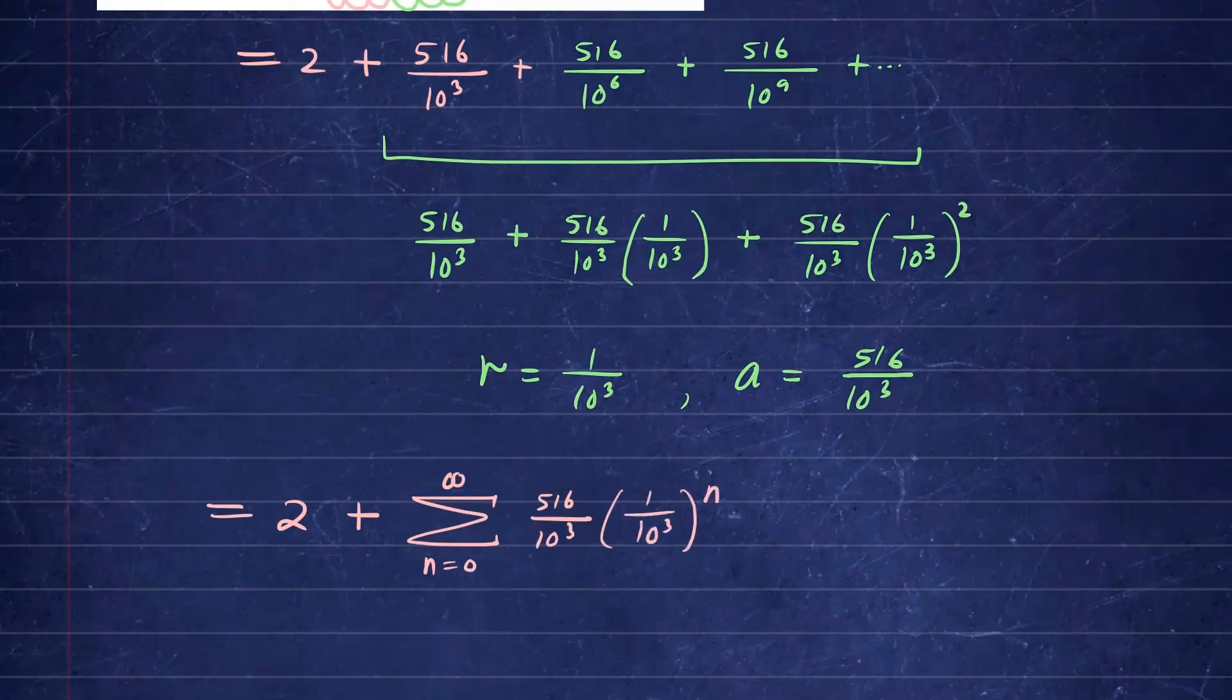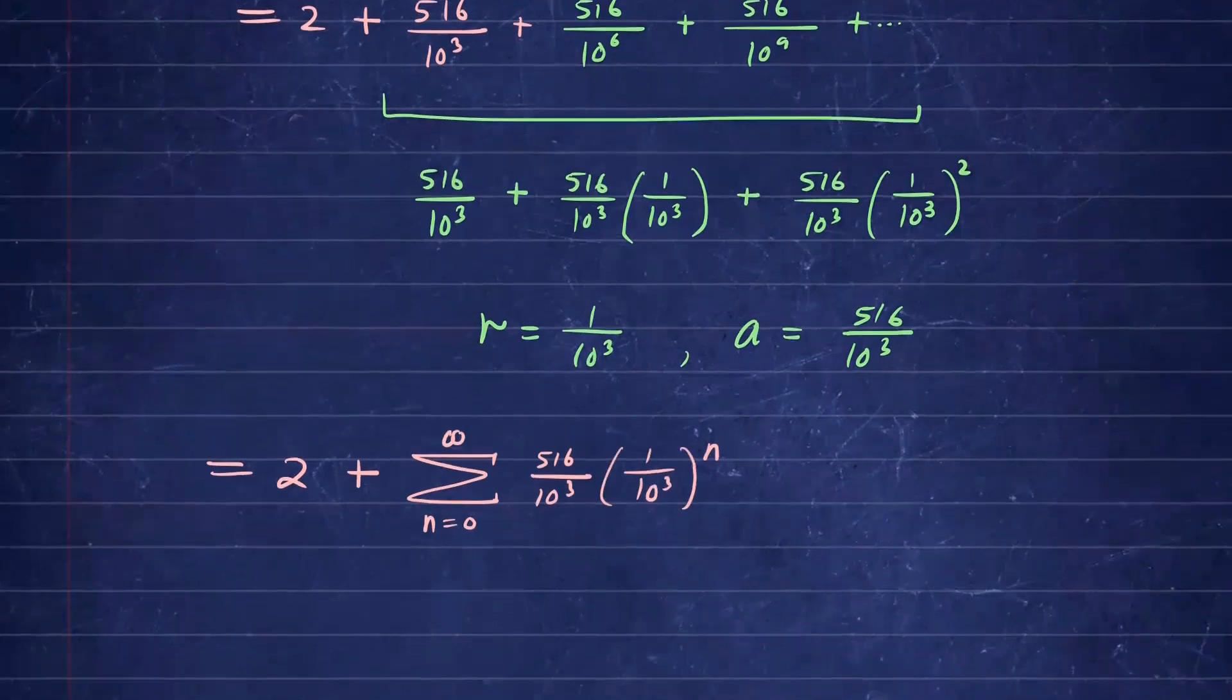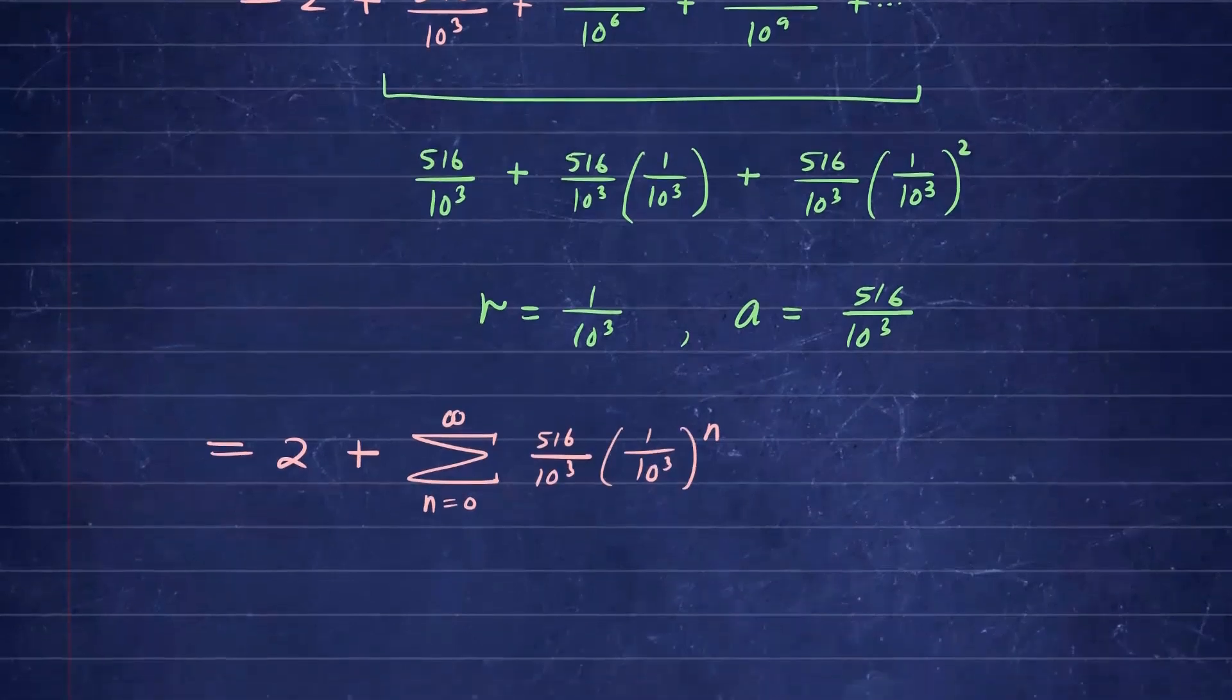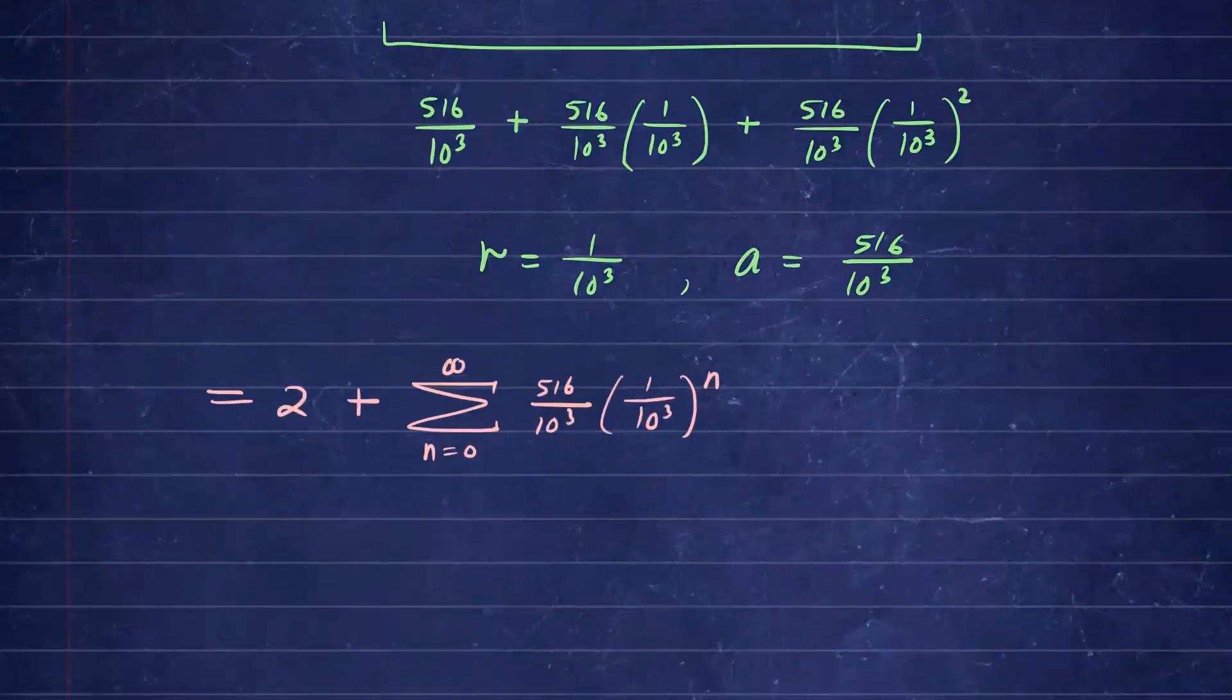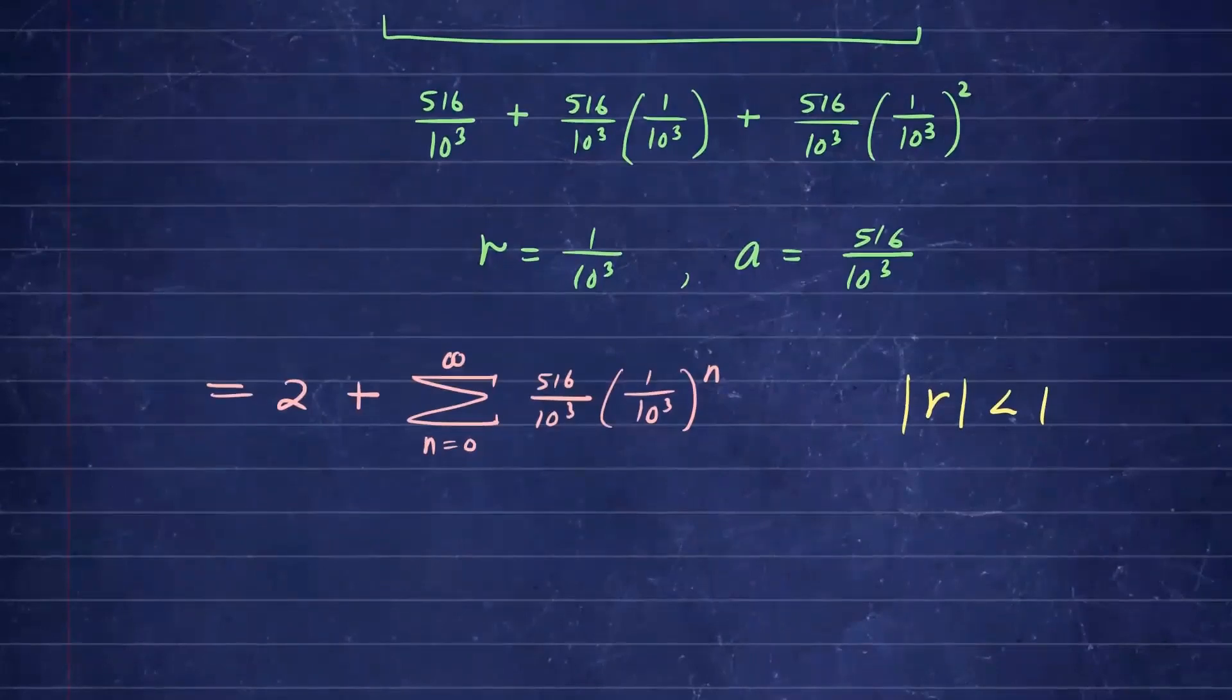And now you just want to test it out. This formula works because we know this is how we express geometric series if the sum starts at 0. So we want to know what will this converge to. Now since your common ratio here, R, happens to be 1 over 10 to the 3rd, we know that as long as R in absolute value is less than 1, then our geometric series will converge to the following.